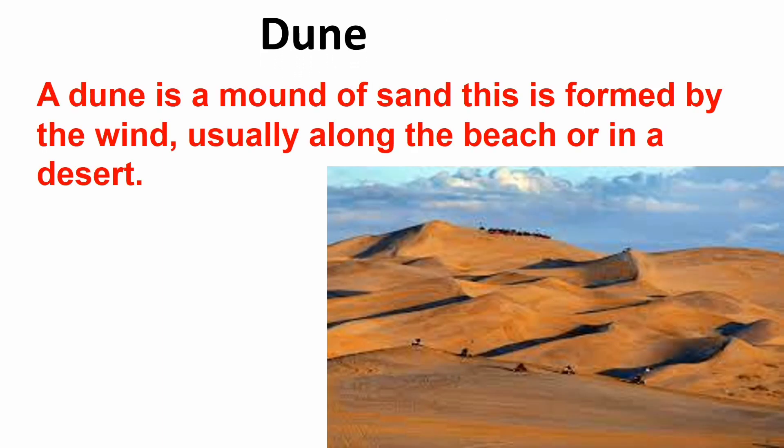Dune: A dune is a mound of sand. This is formed by the wind, usually along the beach or in a desert.